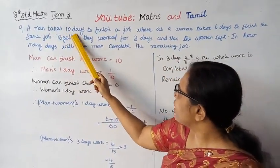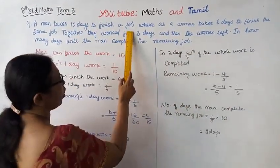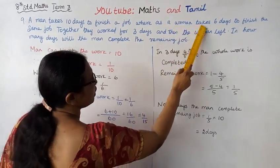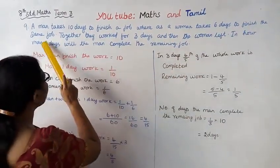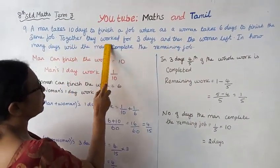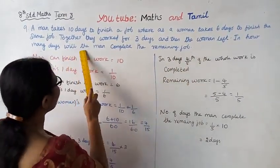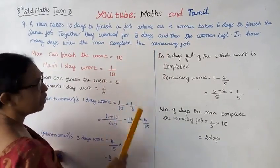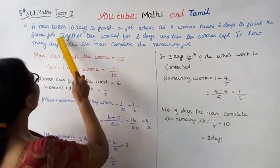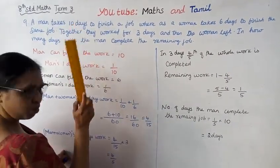A man takes 10 days to finish a job, whereas a woman takes 6 days to finish the same job. Together they worked for 3 days and then the woman left. In how many days will the man complete the remaining job?